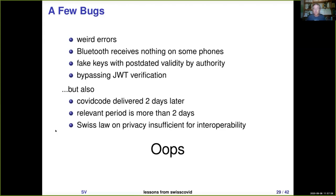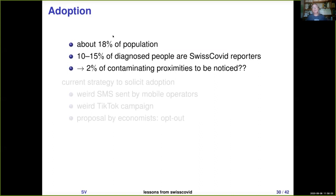On adoption: so far 18% of the population are actively using SwissCOVID — actually a pretty high number, but not sufficient to defeat the pandemic. Between 10 and 15% of diagnosed people are actually reporting using SwissCOVID. If we multiply those two figures together — 18% adoption and 10-15% reporting — it means that the probability of SwissCOVID detecting a contaminating proximity is bounded by roughly 2%, assuming Bluetooth is working correctly. The effect can therefore be very small.